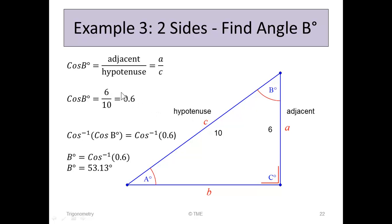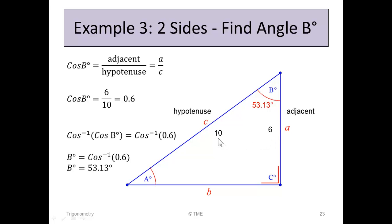Cos of B equals adjacent over hypotenuse, and both numbers are known. So cos B equals A over C, or 6 over 10, which is 0.6. Now, if we know cos B, we find B by taking the cos inverse of both sides. Cos inverse of cos B cancels, leaving B equals cos inverse of 0.6. On a calculator, enter 0.6, press inverse cos, and we get 53.13. So 53.13 is angle B, identified from the adjacent and hypotenuse.